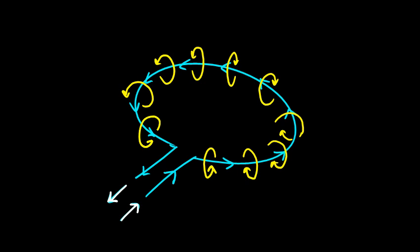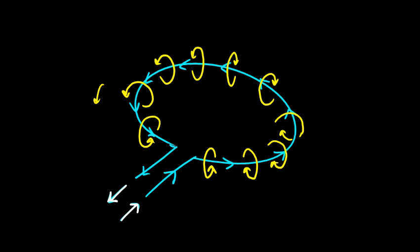What you notice is that everywhere inside the loop, if you picture this correctly, the field is upward. Everywhere outside the loop the field is downward, but outside the loop as you get farther away it quickly weakens. Inside the loop you get this nice strong magnetic field all pointing in one direction.